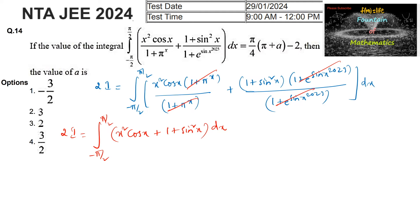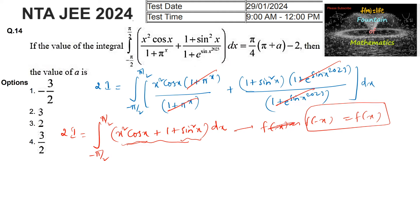Now, since x² cos x is an even function and sin²x is also an even function — replacing x with −x gives the same function, so f(−x) = f(x). By the even function property, ∫_{−a}^{a} f(x)dx = 2∫_0^a f(x)dx.